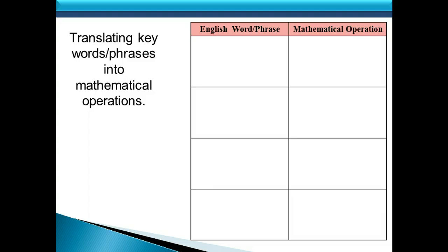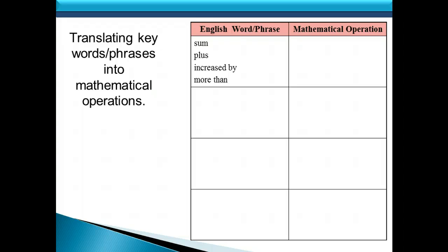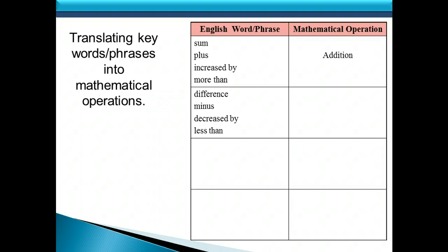We're going to want to be able to write algebraic expressions for an English word or phrase. We need to look at common words or phrases that represent mathematical operations. For example, the word sum, the word plus, the phrase increased by, and the phrase more than all indicate addition. The words difference and minus, the phrase decreased by, or the phrase less than all indicate subtraction.